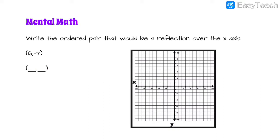Last one: negative 6, negative 7, and it's going to be over the x-axis again. So let's find negative 6, negative 7 — should be right there. Go ahead and pause the video and reflect it over the x-axis. You should have seen that it's still got a positive value for 6, and instead of a negative 7 it's going to be a positive 7. So only the y value is changing.